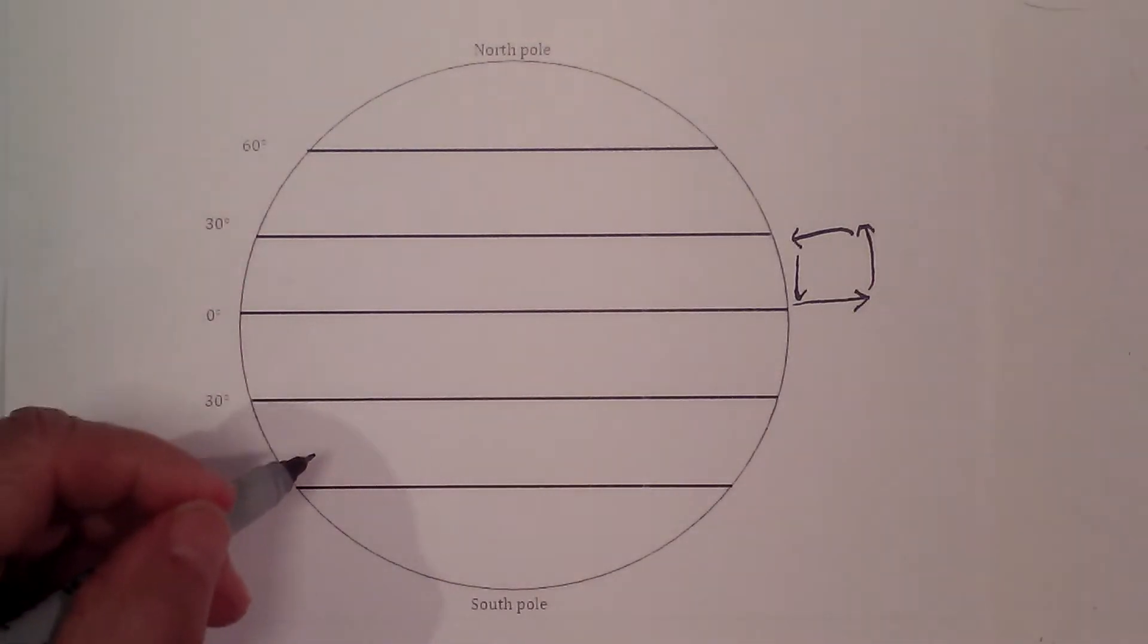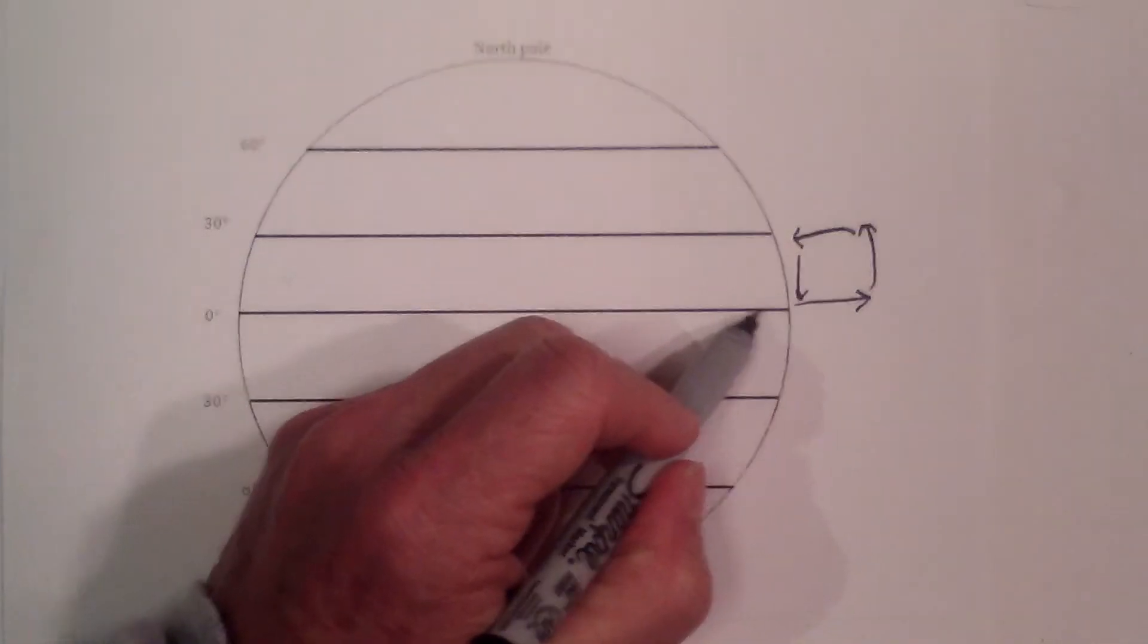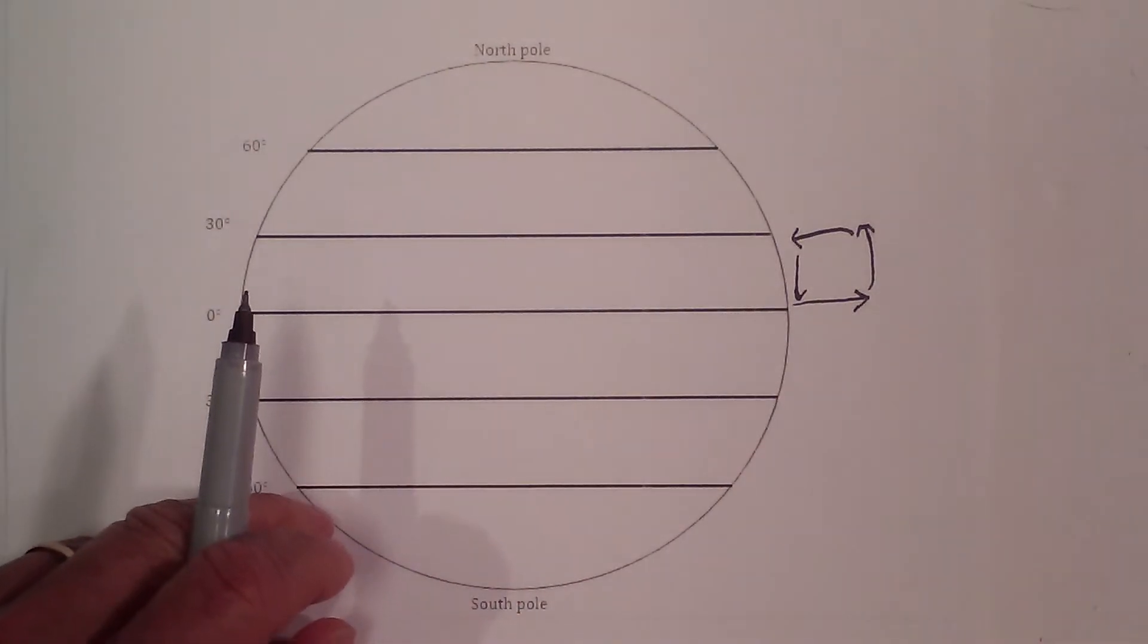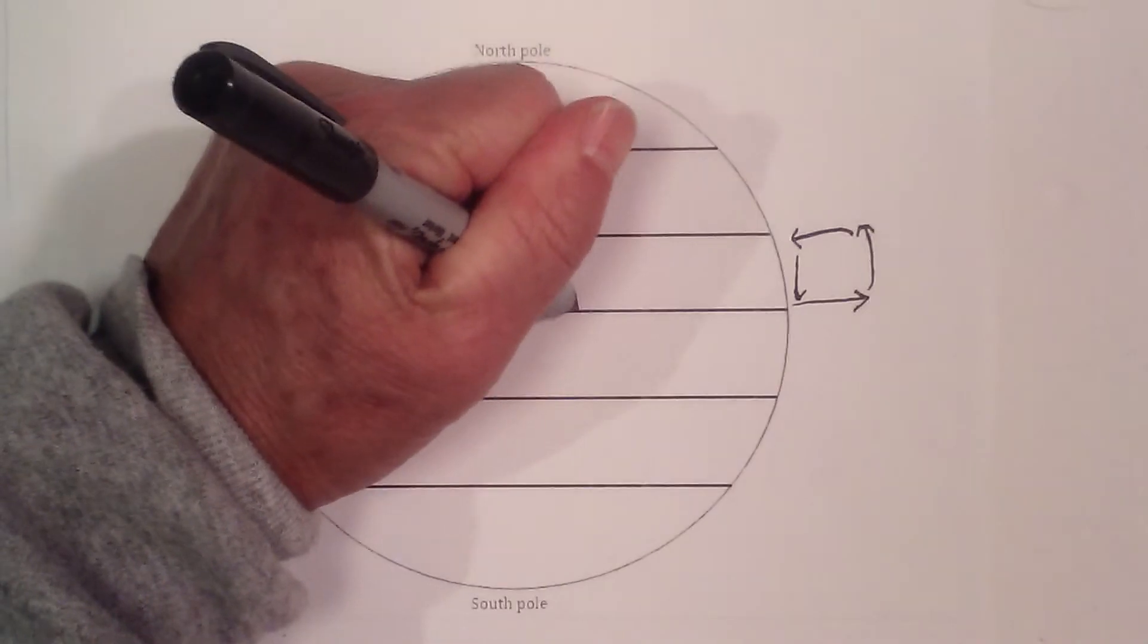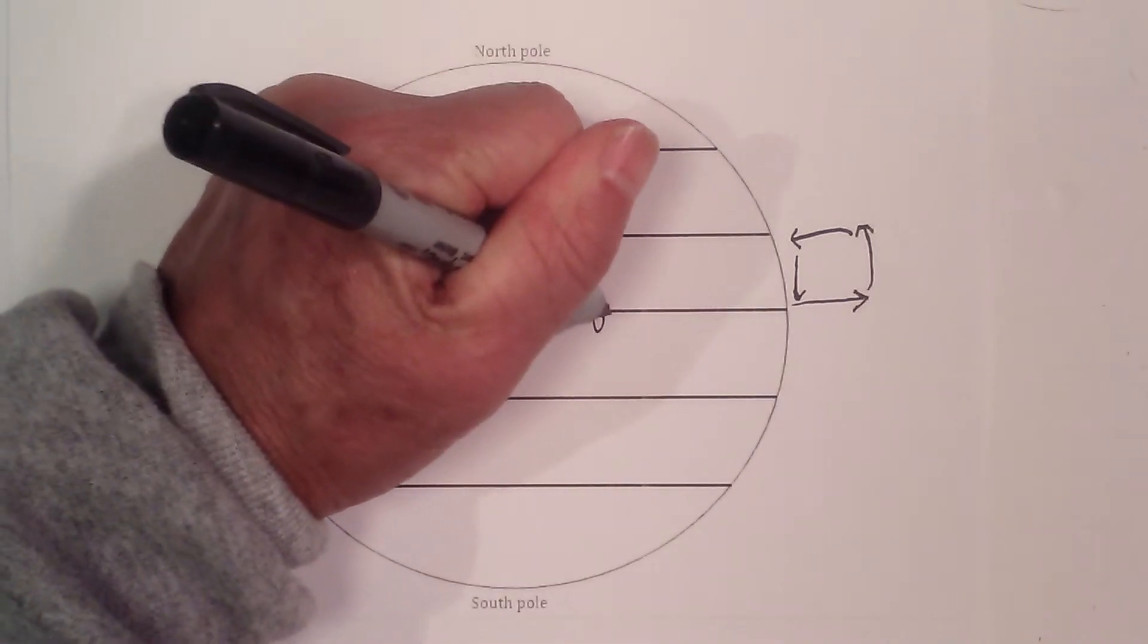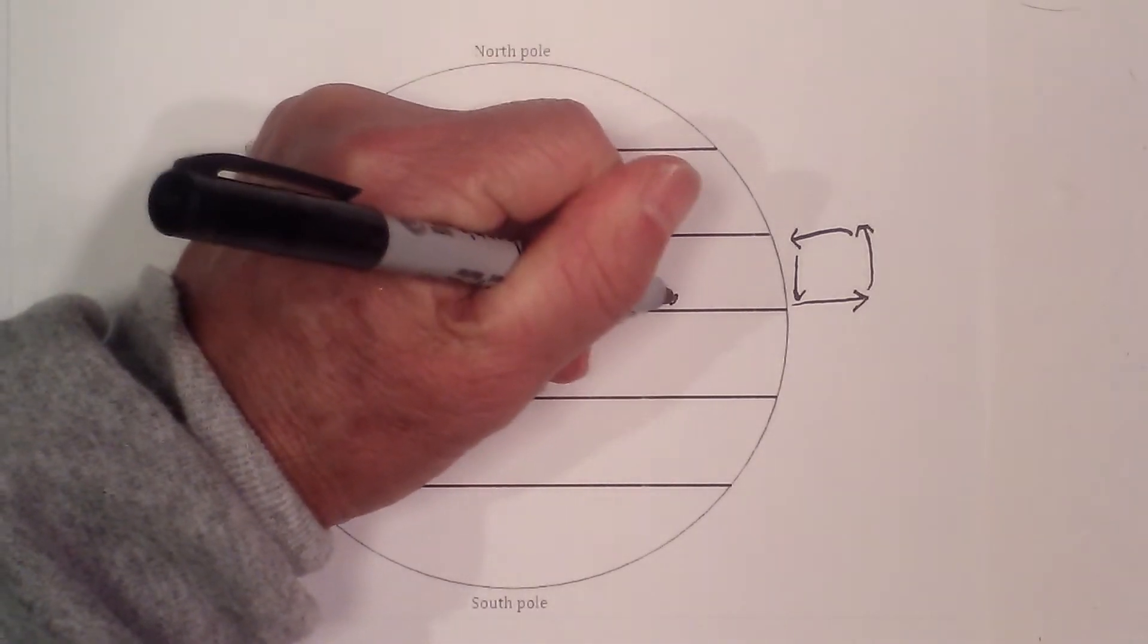So as a result, it creates a low pressure system at the equator, and that's called the equatorial low.